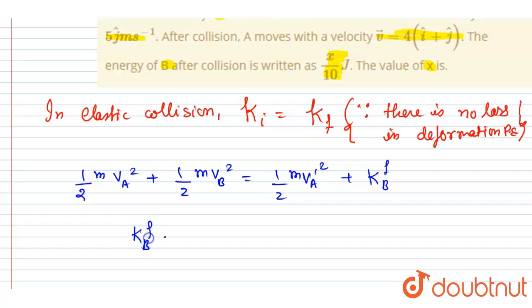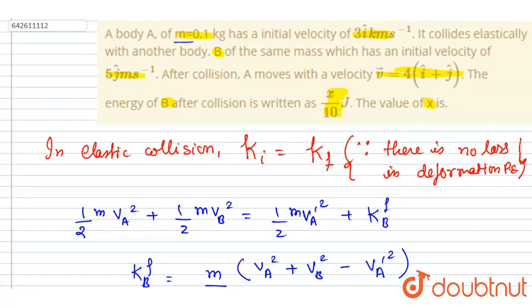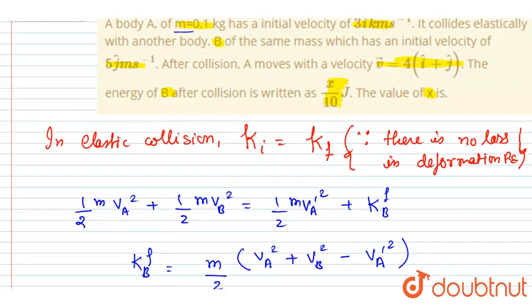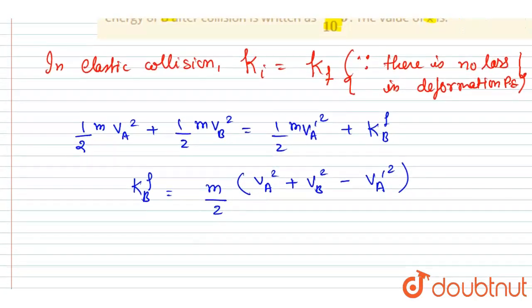And we have to find out the kinetic energy of B final. Now you can see the kinetic energy of B final will be equals to half m, now I will write v_A squared plus v_B squared minus v_A dash squared. Just find out the magnitude of v_A, v_B, and v_A dash.